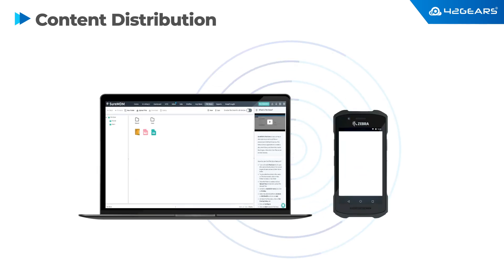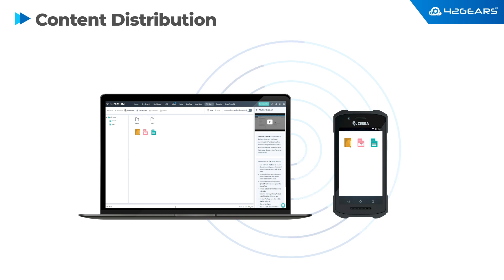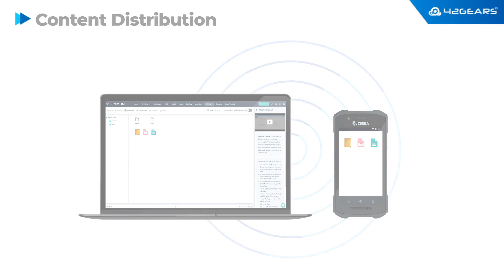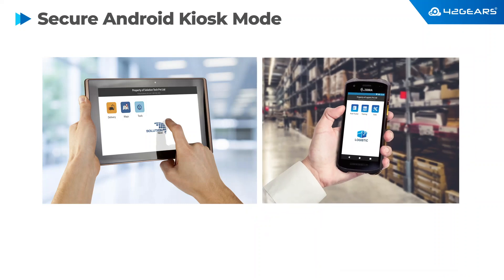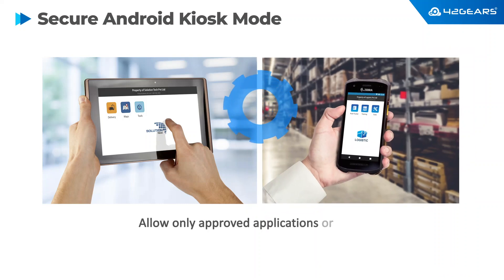You can also easily distribute content such as PDF, Excel files, or any other kind of data files to your devices. For frontline worker scenarios, you can set up kiosk mode on the devices and ensure workers can only use approved applications and websites. Properly locking down the devices results in a direct increase in worker productivity.